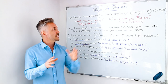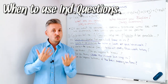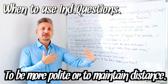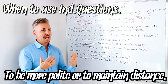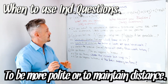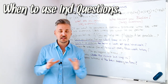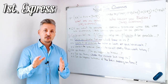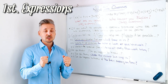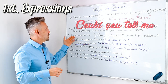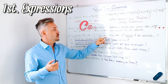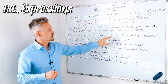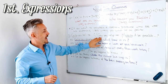In this lesson I want to concentrate on making indirect questions. When would we make indirect questions? When we want to be more polite to somebody, or we want to keep a distance from someone. We have expressions that we use when making indirect questions. The first expression uses modal verbs: 'Could you tell me?', 'Can you help me?', or 'Would it be possible?' Notice how I used modal verbs — could, can, and would.